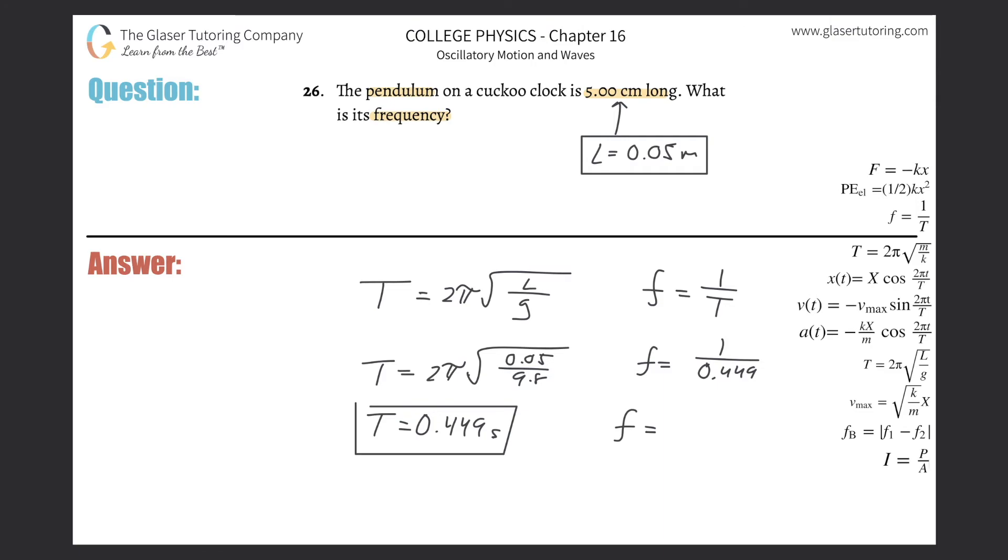Let's calculate it. One divided by 0.449 is about 2.22, or 2.23 considering rounding. That's known as Hertz. Hertz is basically the unit of seconds to the negative one.